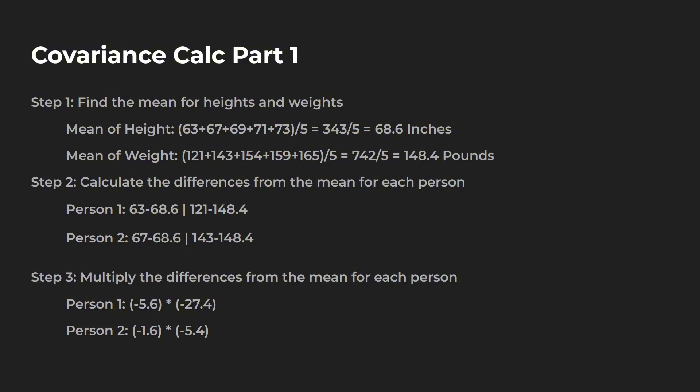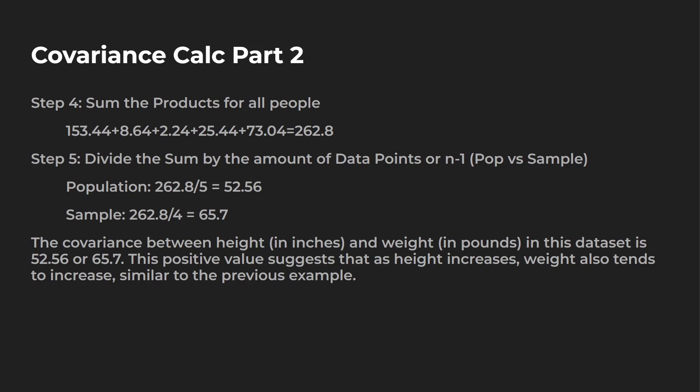Next, what you want to do is sum the products for all the people: 153, 8, 2.2, 25, and 73 — we get 262.8. Now here's where the difference is: do you want to look at specifically the population or sample? For population, you just divide by five for five people. For sample, that is divided by four because you take N minus one — and you can see you get two different results. The covariance between height in inches and weight in pounds in this dataset is 52.56 or 65.7. This positive value suggests that as height increases, weight also tends to increase.